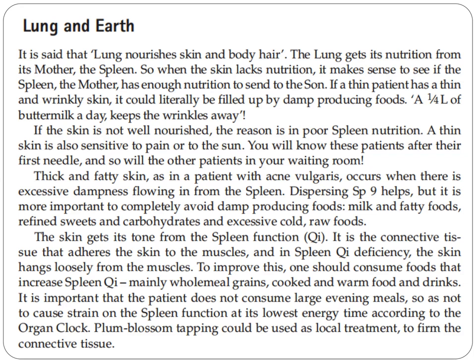The skin gets its tone from spleen qi function. It is the connective tissue that adheres the skin to the muscles, and in spleen qi deficiency, the skin hangs loosely from the muscles. To improve this, one should consume foods that increase spleen qi, which are mainly wholemeal grains, cooked and warm foods and drinks. It is important that the patient does not consume large evening meals, so as not to strain the spleen at its lowest energy time according to the organ clock. Plum blossom tapping could be used as local treatment to firm the connective tissue.